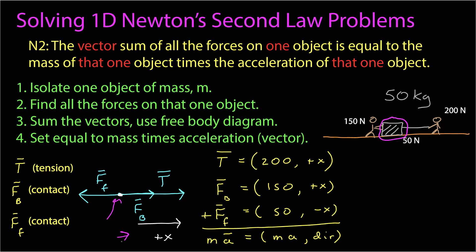In one dimension, it is the sign of the vector relative to this coordinate system that gives us the direction of the vector. So I want to sum these vectors, and so I've written them explicitly here. The tension has a magnitude of 200. It's in the positive x. The force due to Bob is 150 in the positive x. The force due to friction, 50 newtons in the negative x. And the sum of these vectors is equal to the mass times the acceleration, also a vector. And it has a magnitude equal to the mass times the magnitude of the acceleration, and it will have its own direction. I've emphasized the vector nature here.